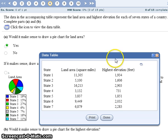This would be much better represented by a bar graph where you could just compare the heights of each bar to one another and see which state had the highest elevation.